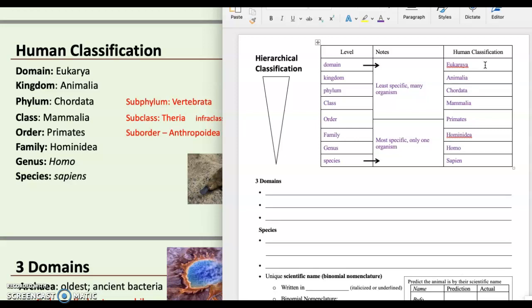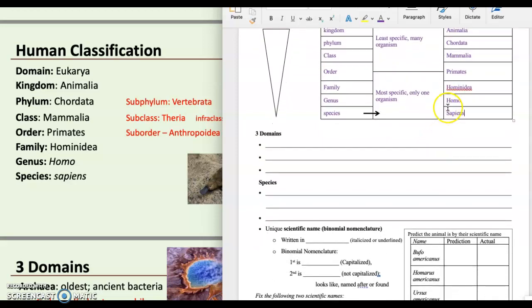And we are in the order called primates. And then we are in the hominidae family. And we are in the genus Homo. And we are the species sapiens. So the way this works is, Homo sapiens, there's Homo erectus, which was an older fossilized classification of humans. So that's where we are the current version. We are Homo sapiens.